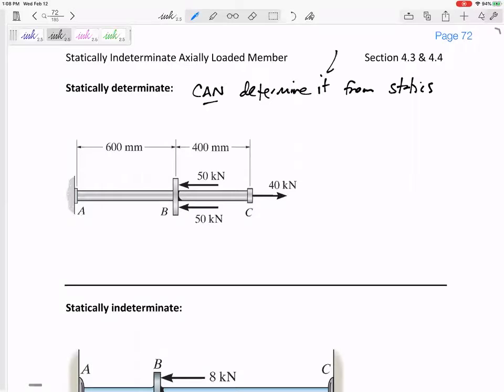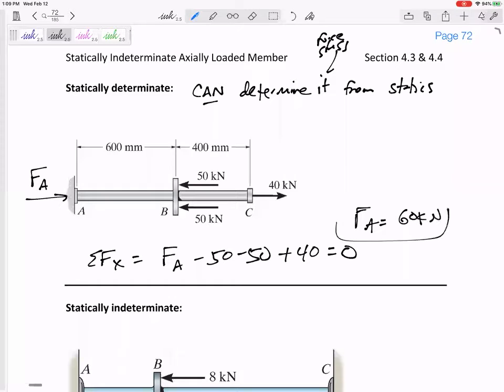For instance, this beam is statically determinate. I've got some force FA right here. And by summing the forces in the X direction, FA minus 50 minus 50 plus 40 equals zero. FA equals 60, came out positive. Positive means I drew it the right direction to begin with. I can determine FA from statics. And so I could determine the stress in every section from statics.